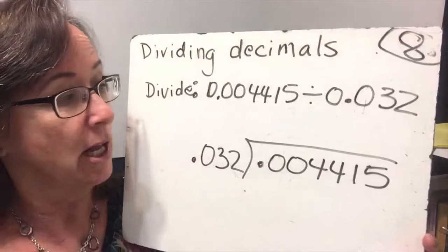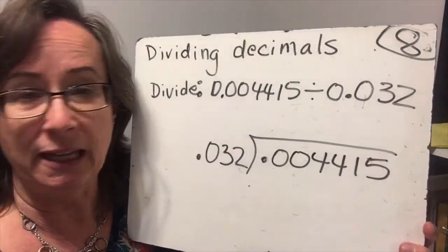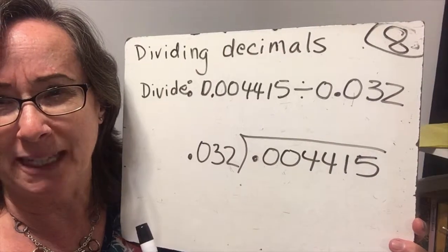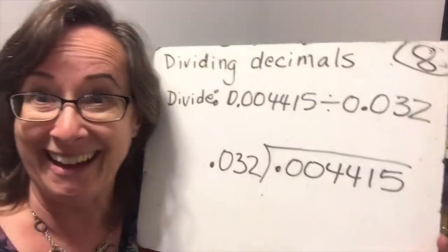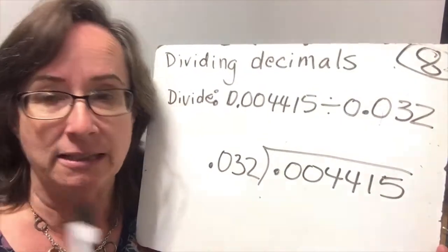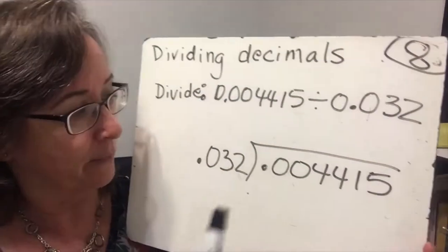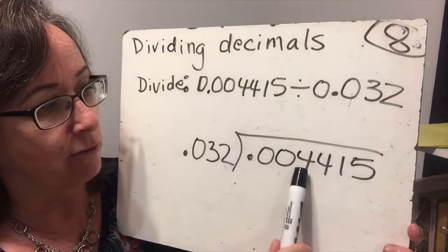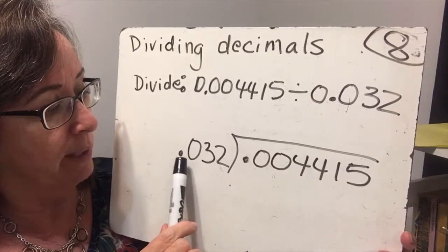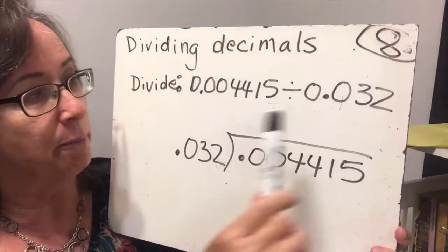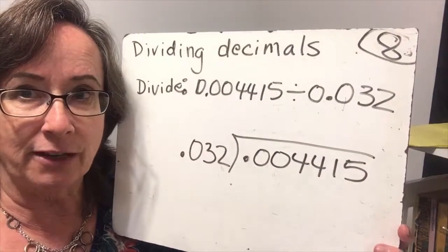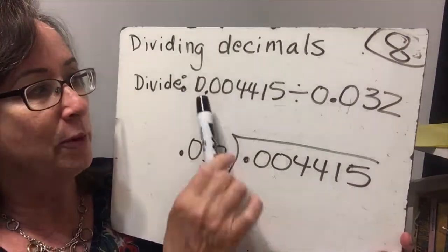My rule is that whenever I have a zero point, I don't worry about the zero in the front because it means nothing. So I leave them off. So 0.004415 divided by 0.032.